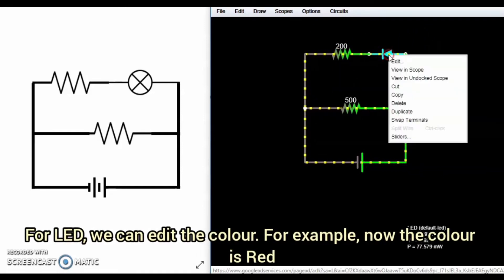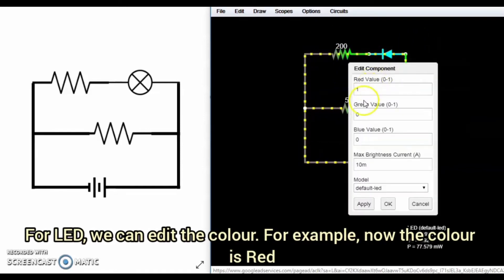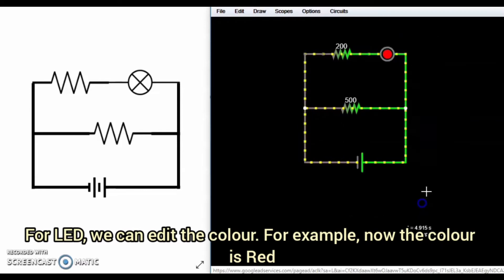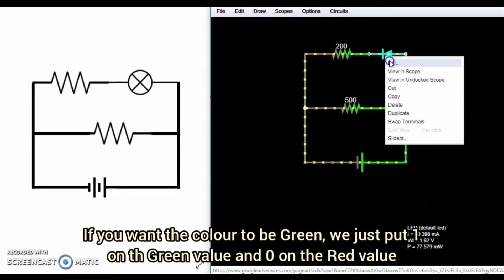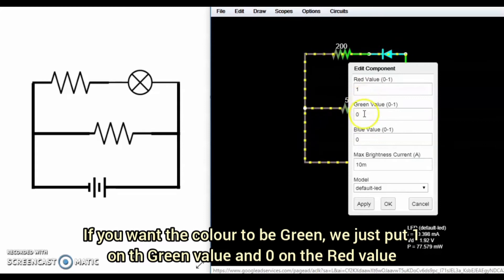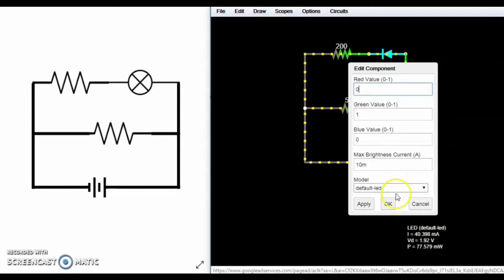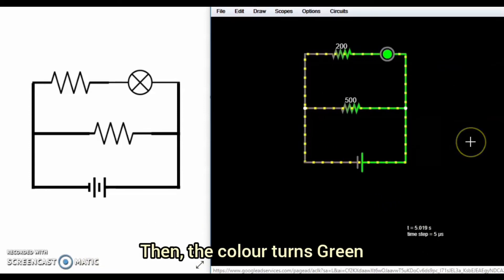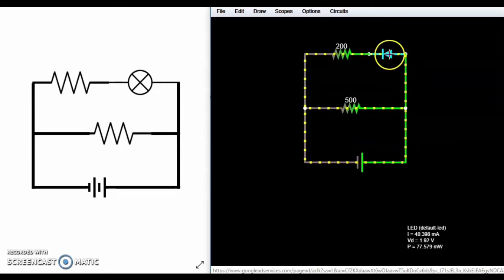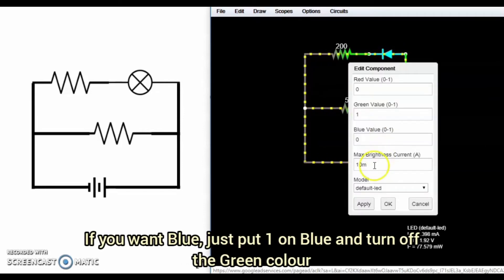For LED, we can add the color. For example, now the color is red. If you want the color to be green, we just put 1 on the green value and 0 on the red value, and then the color turns green. If you want blue, just put 1 on the blue and turn off the green color.